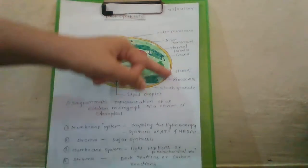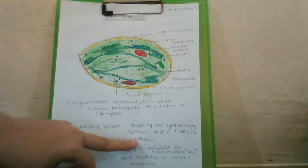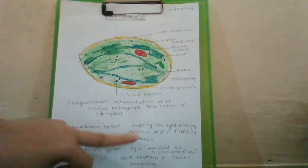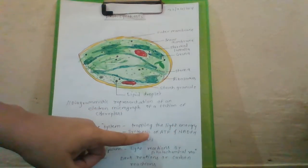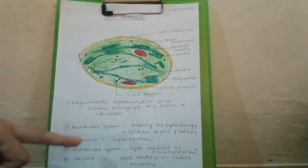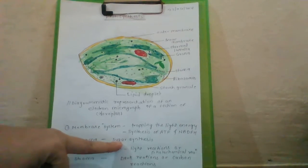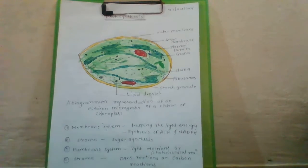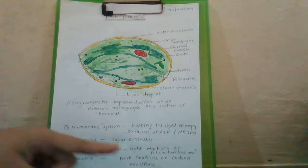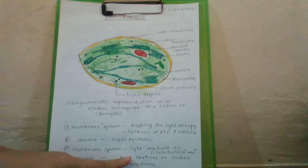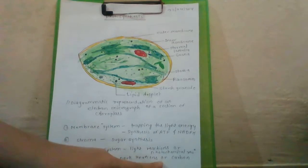The second reaction, carried out by the stroma, involves sugar synthesis and converting it into starch. This reaction is not directly related to light. The membrane system is related to the direct capture of light energy and synthesis of ATP and NADPH, while the stroma reaction is called the dark reaction or carbon reaction.